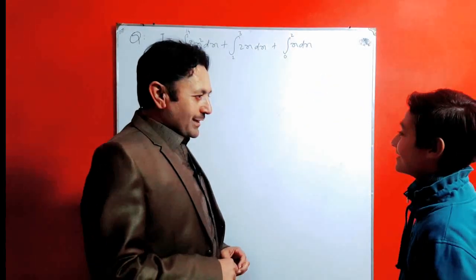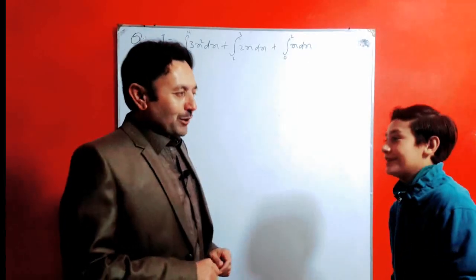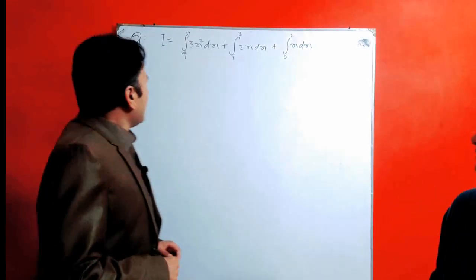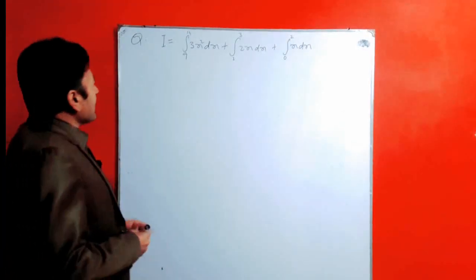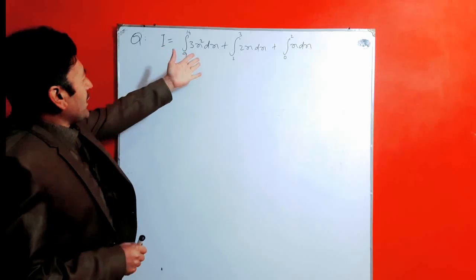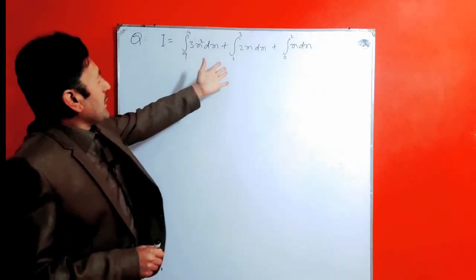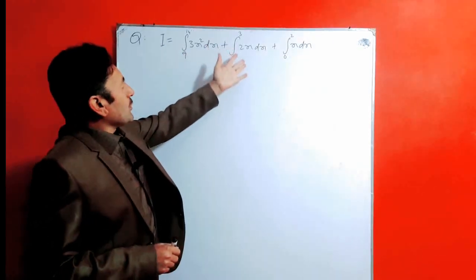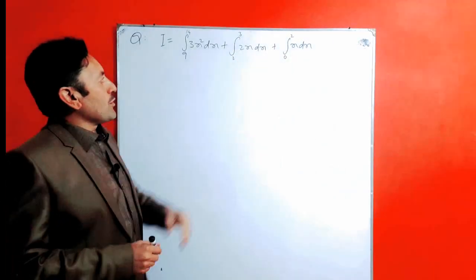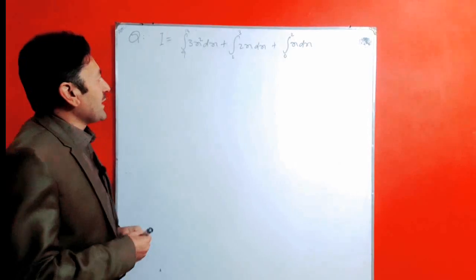Okay, solve this question. I is equal to integration from 0 to 14 of 3x squared dx, plus integration from 2 to 3 of 2x dx, plus integration from 0 to 2 of x dx.